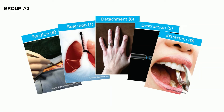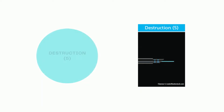These are the five root operations in this group. We have already seen excision, resection, and detachment. Today we are talking about Destruction, which carries a character value of five. Root operations are the most important aspect of building an ICD-10-PCS code, and they denote the objective of the procedure. You need to know what the provider or surgeon is trying to do — the goal of the procedure defines the root operation. Always read the definitions and compare them to the actual procedure performed.